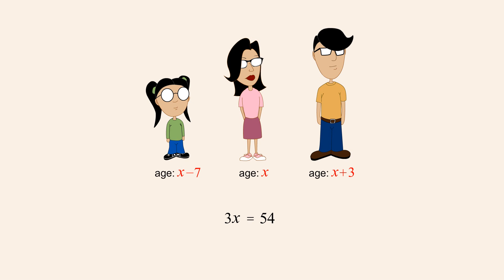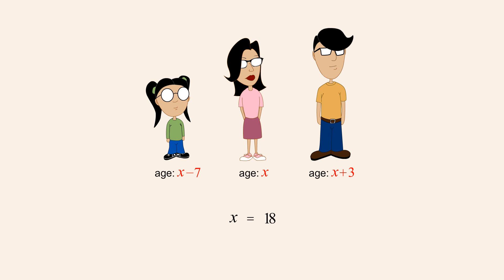We can now eliminate the coefficient of x, three, by dividing both sides by three. This allows us to cancel the threes in the numerator and denominator of the fraction on the left, leaving us with the equation x equals fifty-four over three, or x equals eighteen. So Adrian's age, x, is eighteen.